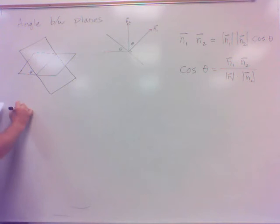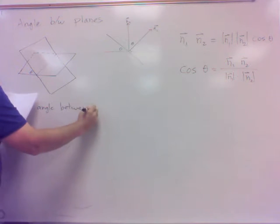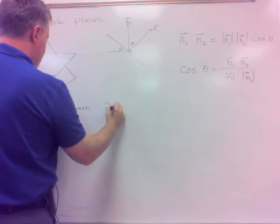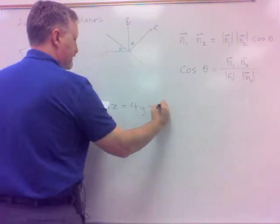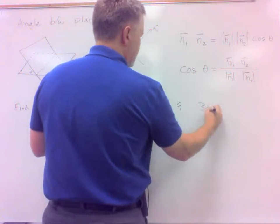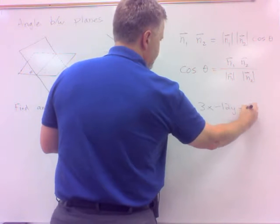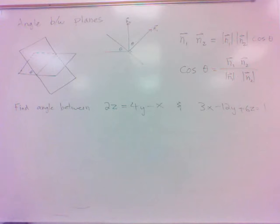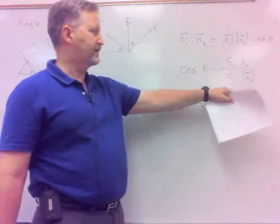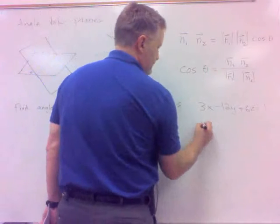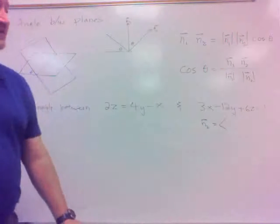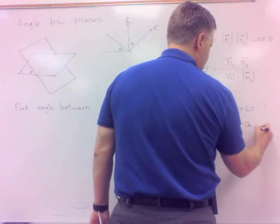Alright, so let's find the angle between these planes. 2z equals 4y minus x, and 3x minus 12y plus 6z equals 1. So to get this angle between, we need the normal vectors. Now the normal vector on this one, this one's our n2, second plane, so let's call it n2. Very easy, right? A, B, and C is 3, negative 12, and 6.